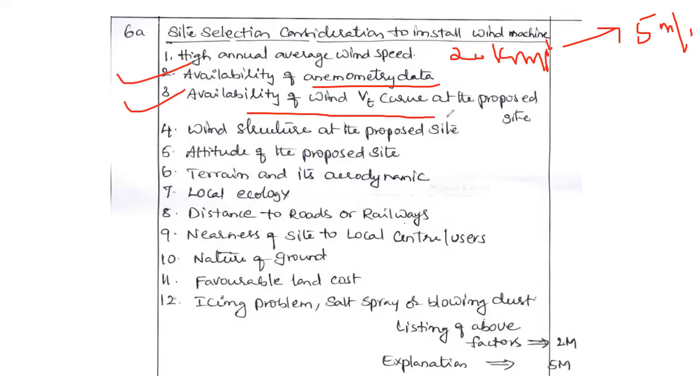Availability of the wind velocity curve at the proposed site. Wind direction at the proposed site. Altitude of the proposed site. Terrain and its aerodynamics. Local ecology - study about the local ecology, how much amount of population, is there any residential area nearby, is there any forest area nearby. Distance to the roads and railways - like maintenance, for the maintenance transportation, we require road and rail facility. And nearness of the local center, uses, and the nature of ground like load bearing capacity. Favorable land cost. Then icing issues, salt spray etc. Everything you have to consider. You can write a few more points which is not included in this handwritten. This is only for your reference.